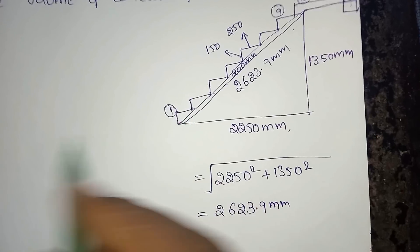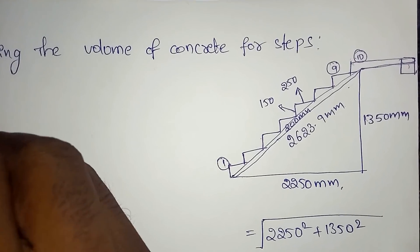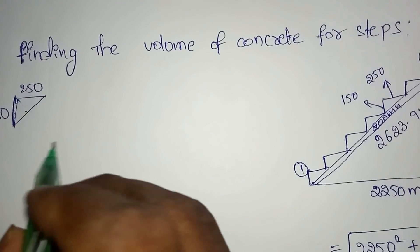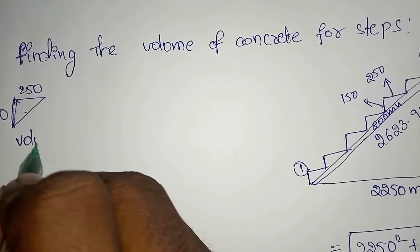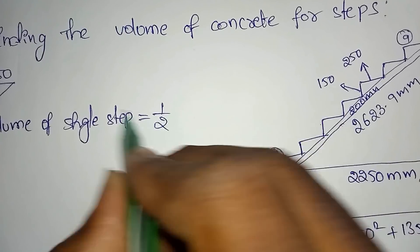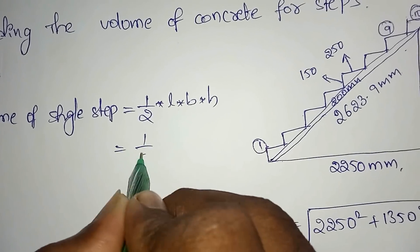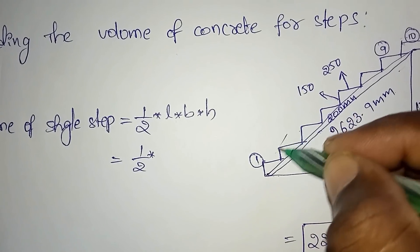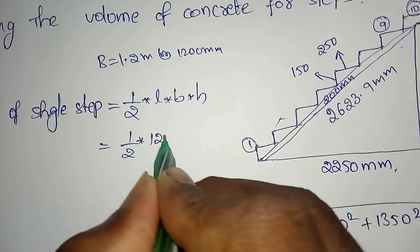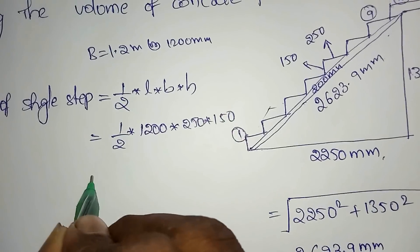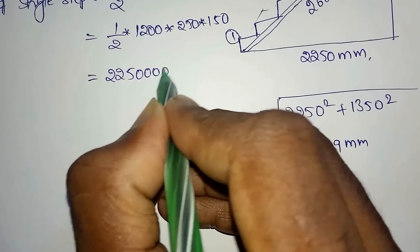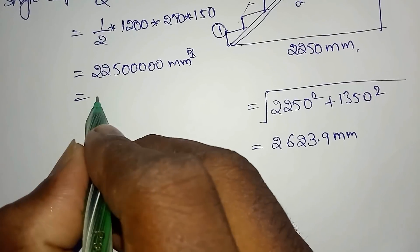First, finding the single step volume. The volume of a single step uses the triangle formula: ½ × L × B × H. So, ½ into length, width B is equal to 1200 mm, into 250 into 150. The value is 22,500,000 mm³, converted into meter cube.